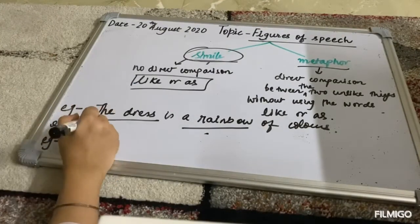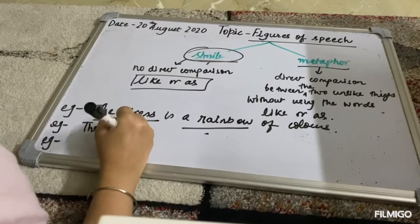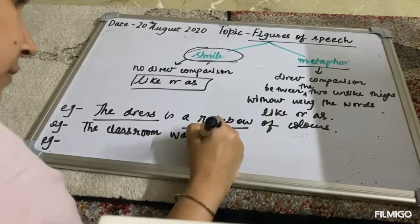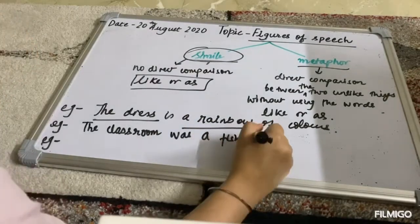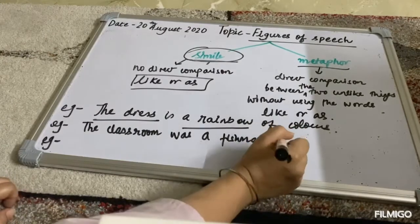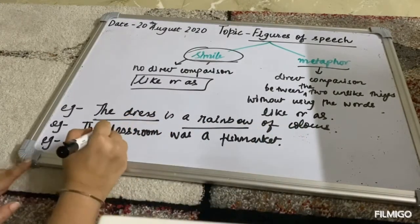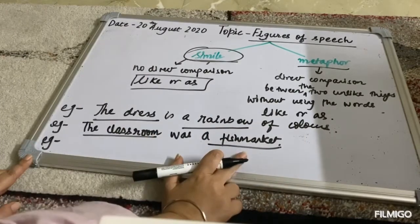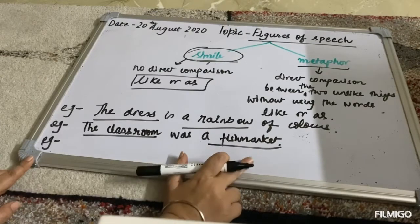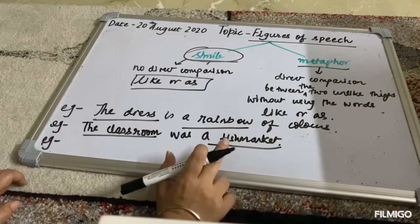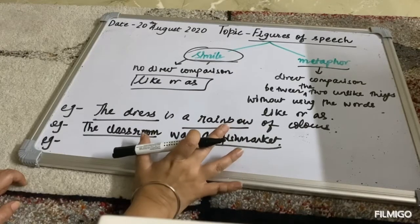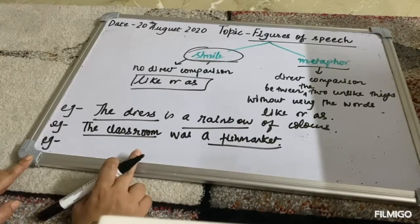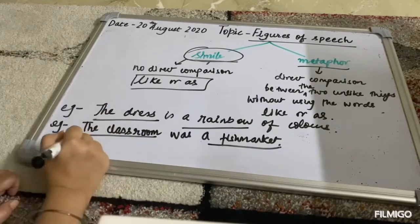Another example could be 'the classroom was a fish market.' Here again I am comparing two unlike objects — the classroom and a fish market — and a direct comparison is made without using the words 'like' or 'as'. What I mean to say is that there was so much noise in the classroom that it was looking like a fish market.